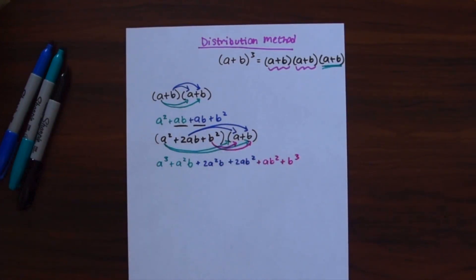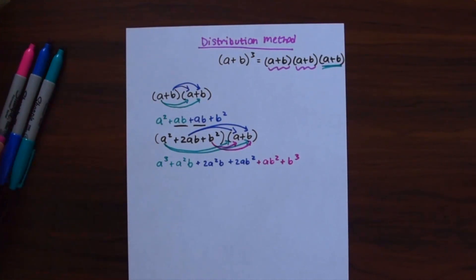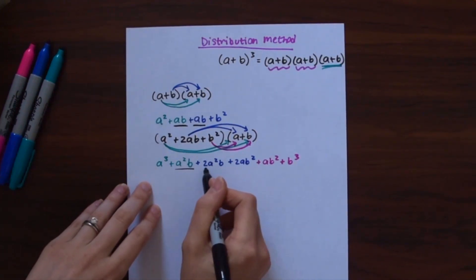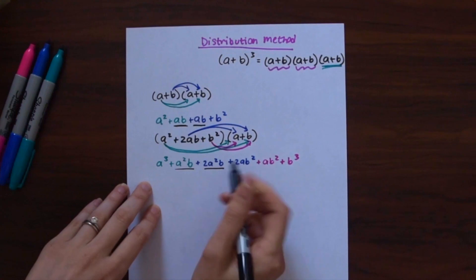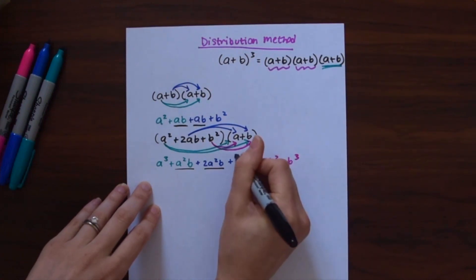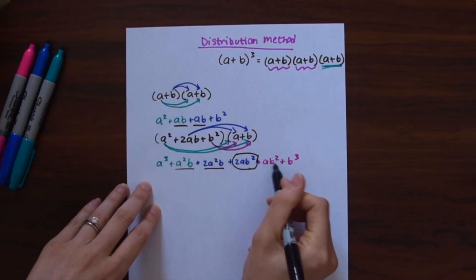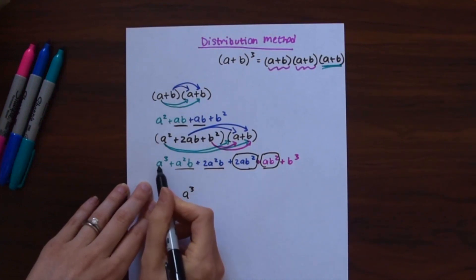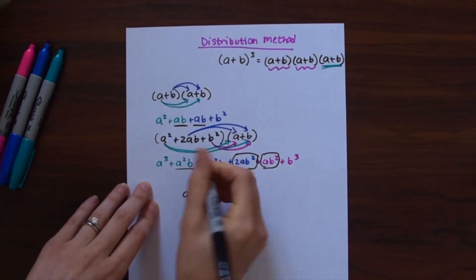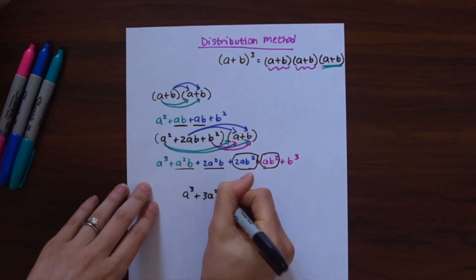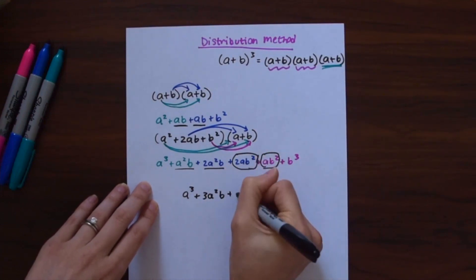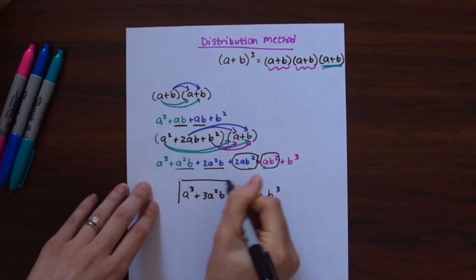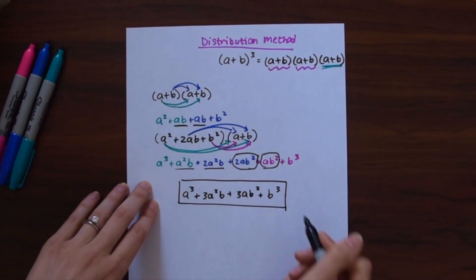So now let's look for like terms to combine. We have a²b and another a²b, so we add those together. We also have ab² and another ab². Combining everything: a³ plus 3a²b plus 3ab² plus b³ — the same exact answer as the box method.